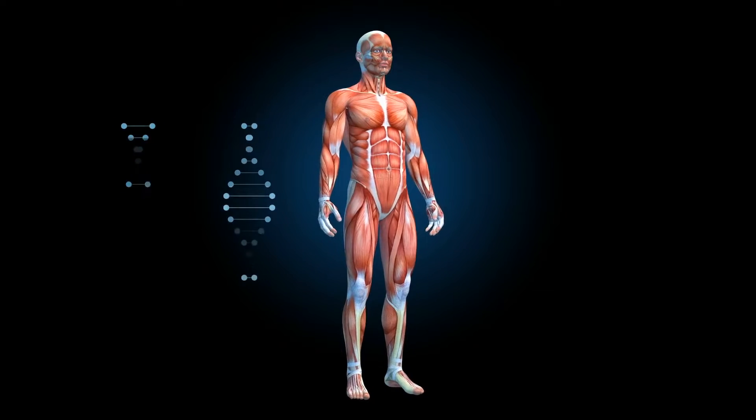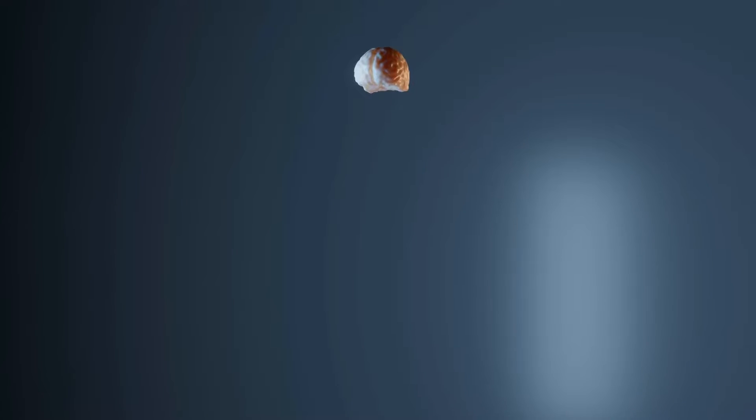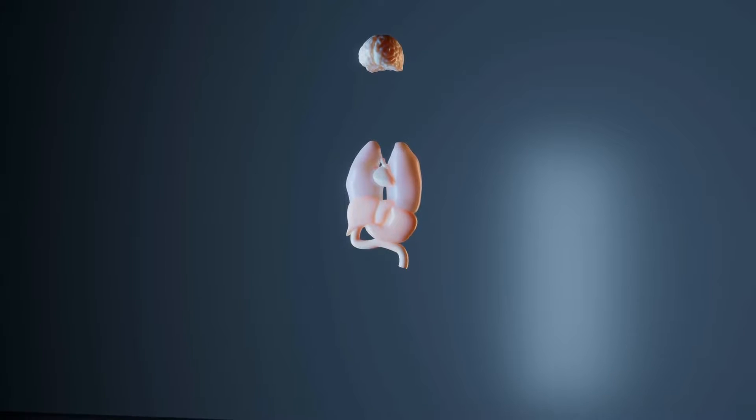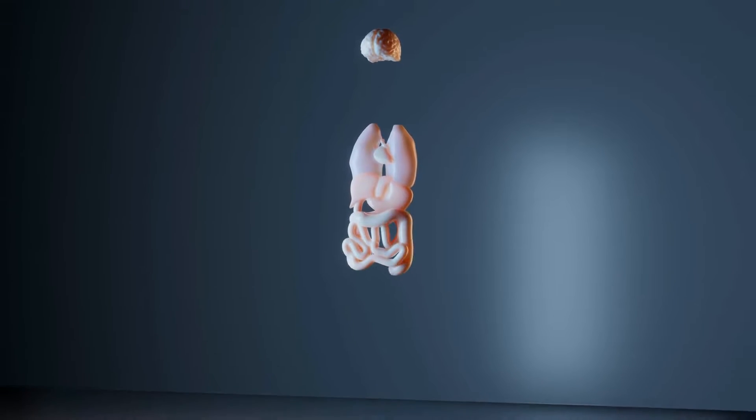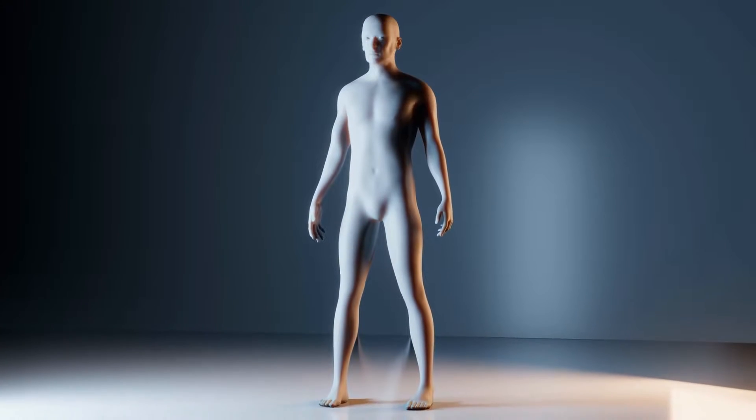My lab is interested in understanding how cells make decisions — how do they respond to cues from the environment. We all started as a single cell that divided to make the entire person. Cells during this process have divided and expanded, but they made different decisions. Some were deciding to become eyes, some were deciding to become skin, some were deciding to become liver. What we're trying to understand is how do cells know how to make these decisions and how to keep the right decisions.